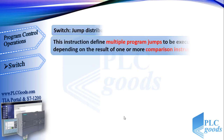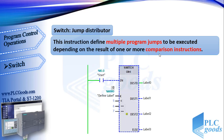Let's see the next instruction: switch, or jump distributor. This instruction defines multiple program jumps to be executed depending on the result of one or more comparison instructions. We can select the data type of the instruction. This instruction is like jump list — first we need to activate it, then the destination network will be determined based on some comparison. Here we can select comparators. For each condition, we must determine a label at the output part. If none of the conditions are true, the program will jump to the last destination.